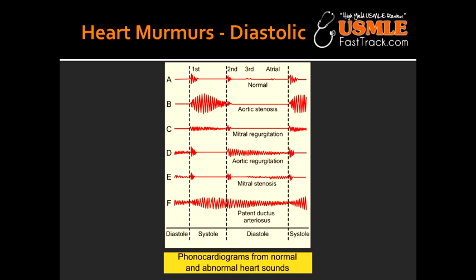What maneuver increases the intensity of murmurs caused by aortic regurgitation? The maneuver that causes this is the hand grip maneuver. Vasodilators decrease the intensity of the murmurs caused by aortic regurgitation.